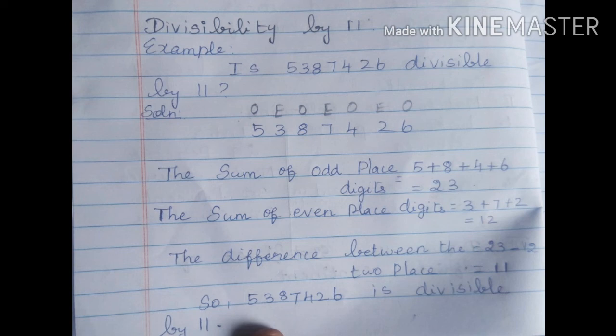We got 11. So the number is divisible by 11. 11 comes as a multiple of 11. Multiples of 11 are 11, 22, 33, 44. If that number comes to 0 or a multiple of 11, it satisfies divisibility by 11.